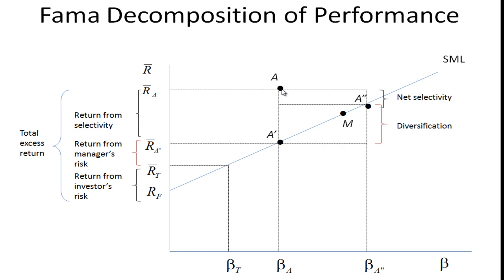He looks at this portfolio A double prime. The difference between the return for A and the return for A double prime is what he calls net selectivity. That's the extra return you get given the extra total risk that you're taking. Then the part from A double prime to A prime, that extra risk is due to diversification or the fact that you're less diversified, you're taking on more total risk.